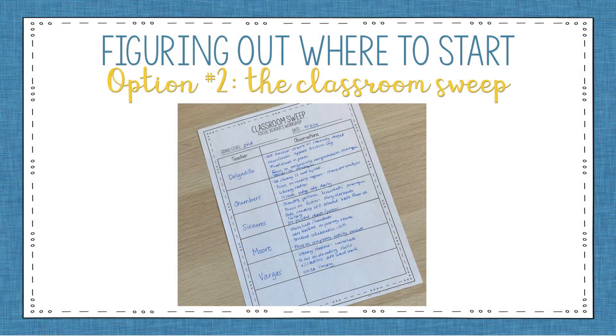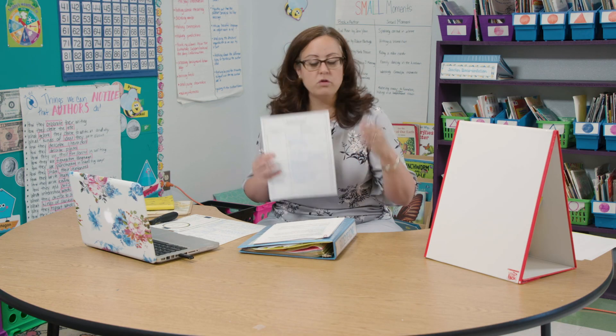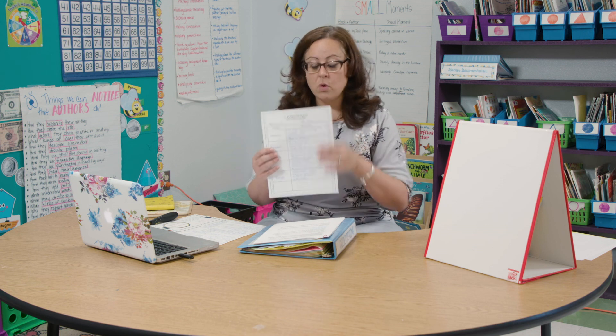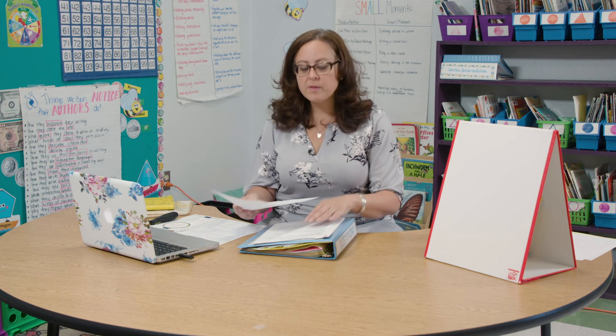The other option is a classroom sweep. This is an approach where you visit every single classroom on your campus, or you can do it by grade levels if that's overwhelming, and you take notes about what you see. The purpose of this is to gather information about what practices are in place on your campus and what is the effect on students.